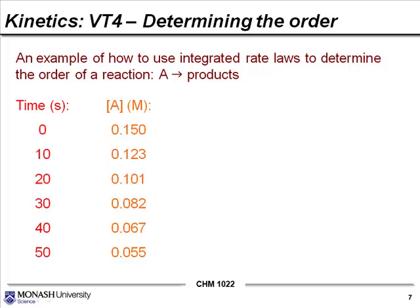If you have this kind of data where you have multiple points which you can plot as concentration changes with time, you can determine whether you've got zero, first or second order kinetics. Let's have a look at an example. We've got some reaction where A turns into some product. It doesn't matter what the products are because we're just going to focus on the change in concentration of reactant A with time.